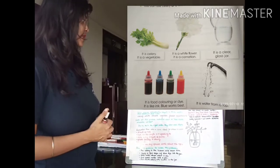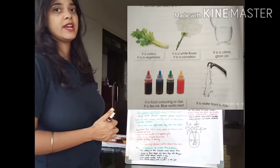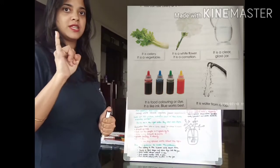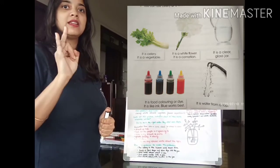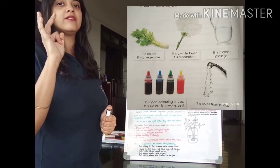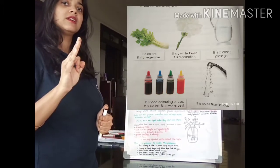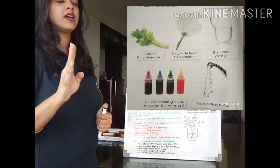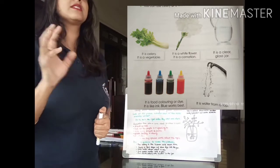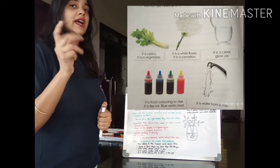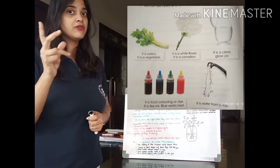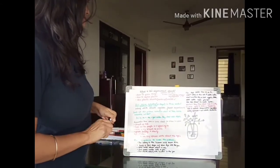Now look at the equipment, the things needed for the experiment. Look at them carefully. As I told you, a jar of water is there, celery, then flour, you need tap water and some food dye or food color.